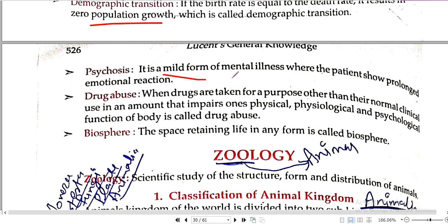Psychosis is the mild form of mental illness where patients show a prolonged emotional reaction. Drug abuse: when drugs are taken for purposes other than their normal clinical use, in an amount that impairs one's physical and psychological functions, it is called drug abuse.